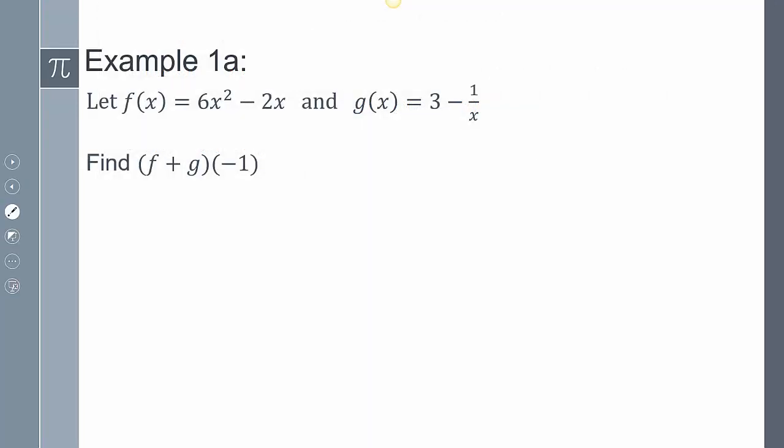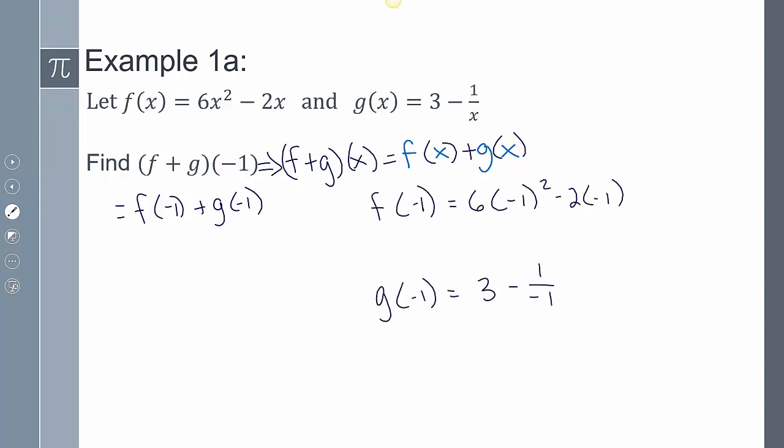Here's the first one. Let f(x) = 6x² - 2x and g(x) = 3 - 1/x. Find (f+g)(-1). So that's the same thing, f+g of x is the same as f(x) + g(x). So I'm taking the two functions and adding them together. My input is -1, so I need to plug in -1 into my function. So it's going to be f(-1) + g(-1).